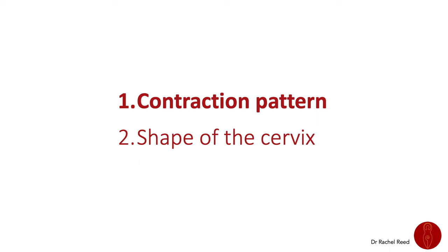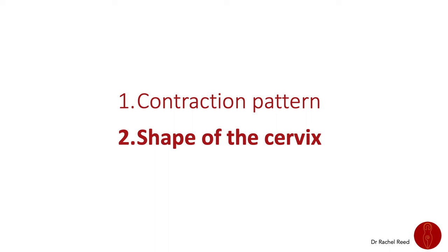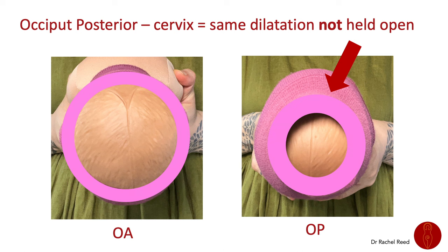It's also very common for women to push during contractions with an OP baby, as the occiput presses on the nerves in the back of the pelvis. This additional downward pressure against the tension of the pelvic bowl encourages rotation. There is also a variation in the shape of the cervix. Remember the transformation of the uterus and how the cervix is pulled upwards by the formation of the fundus — the shape of the cervix is determined by what is holding it open as it is pulled upwards.